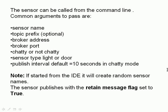Sensors should be started from the command line where you can pass the sensor name, topic prefix, broker address, broker port, a switch for chatty or non-chatty mode, verbose flag, sensor type (by default it's a light sensor publishing on and off, but if set it can function as a door sensor publishing open and closed), and the publish interval (set to 10 seconds by default in chatty mode). If started from the Python IDE it will create a random sensor name and publish with the retain message flag set to true.